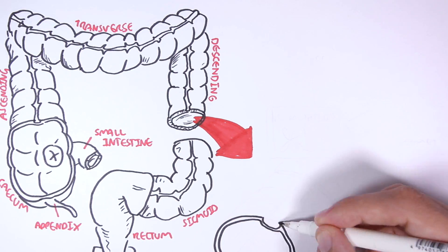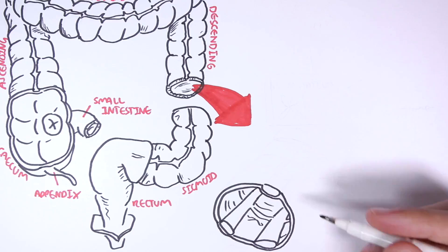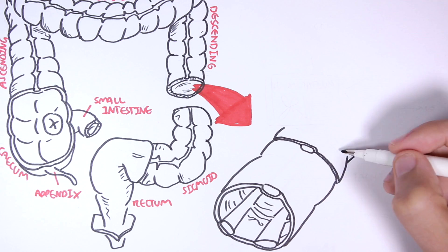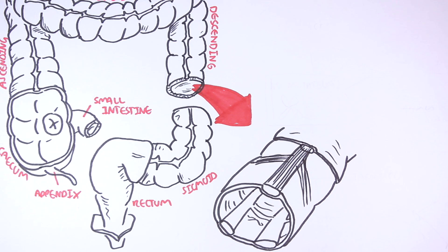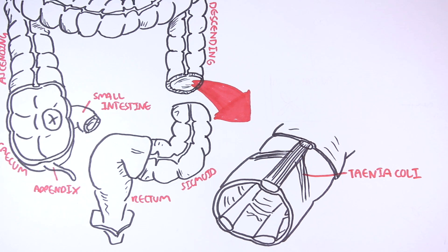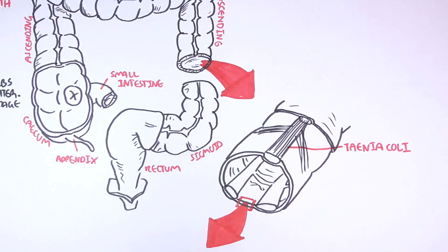Let's take a section of the colon. These three longitudinal fibers that run along the colon are called tinea coli. The tinea coli runs along all segments except the rectum.